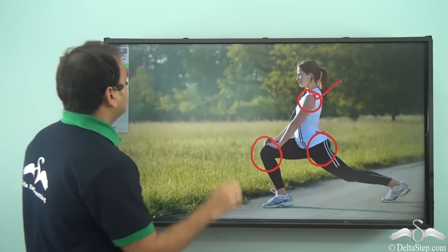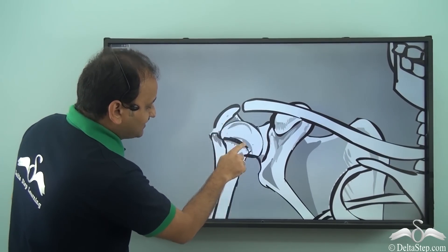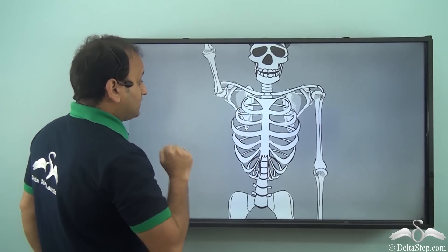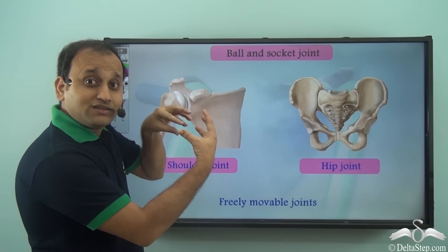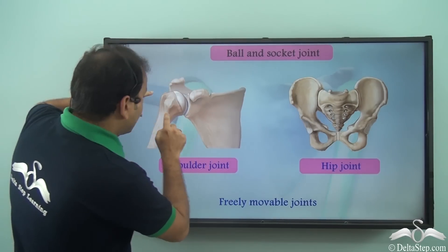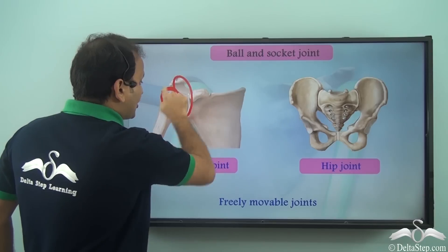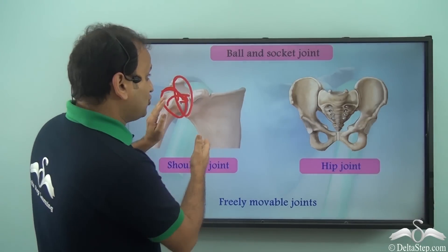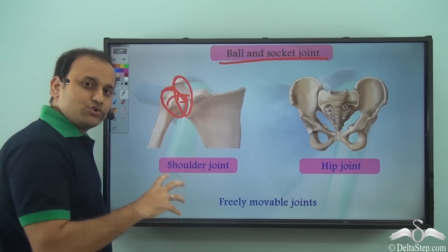What exactly happens at the shoulder? This is the shoulder joint, and as you can see, the shoulder joint moves like this. This particular bone and this particular structure here fit into each other. This is a structure where one bone fits into the other, which is more like a socket. This ball-like structure fits into this socket-like structure, and this particular type of joint is called a ball and socket joint.